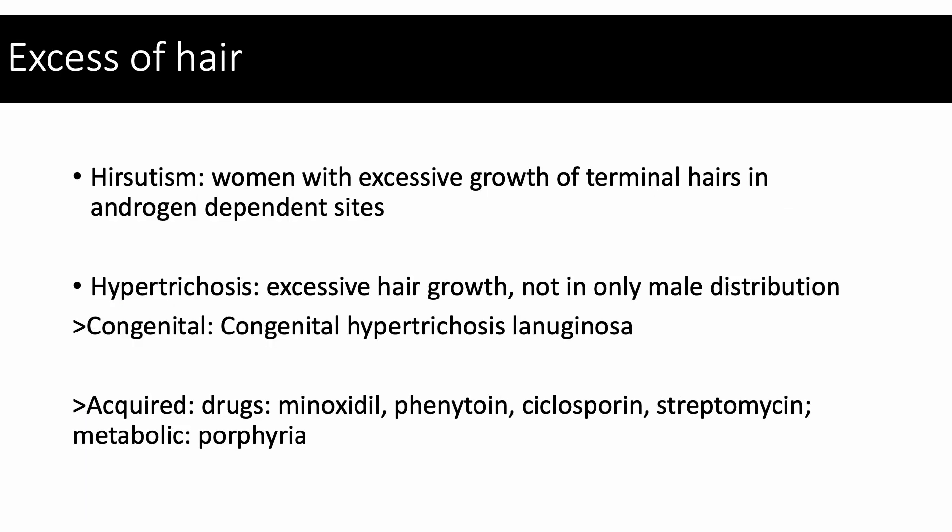Excess hair. There are two different terms used to describe hair excess: hirsutism and hypertrichosis. Hirsutism occurs in women with excessive growth of terminal hairs in androgen-dependent sites. Hypertrichosis results in excessive hair growth which doesn't necessarily occur in androgen-dependent sites. Causes of hypertrichosis can be divided into congenital, such as congenital hypertrichosis lanuginosa, or acquired, resulting from drugs such as minoxidil, phenytoin, cyclosporine, or streptomycin, or metabolic causes such as porphyria.